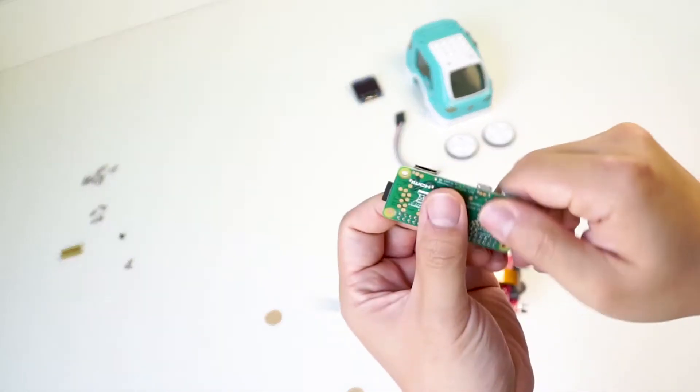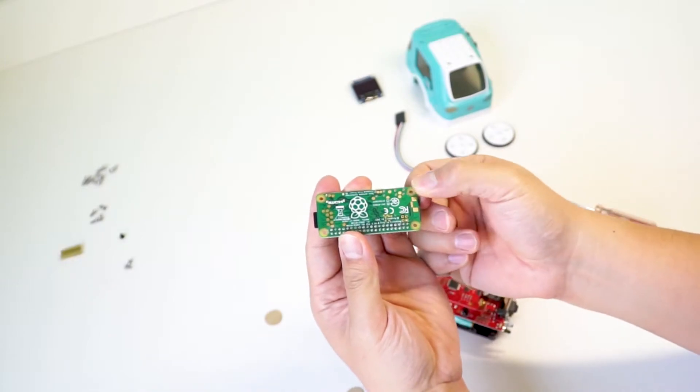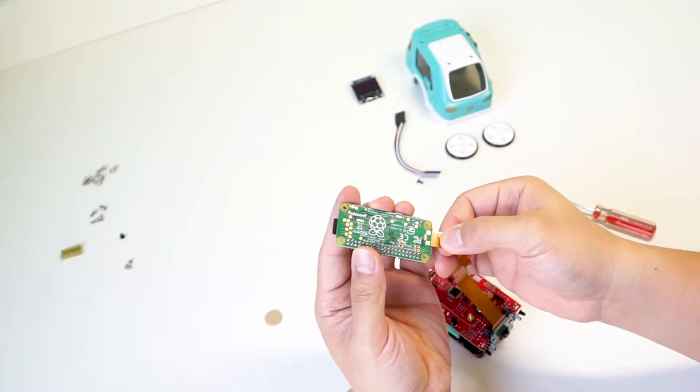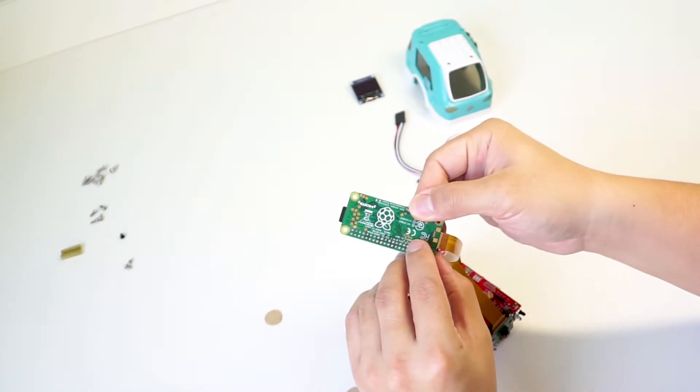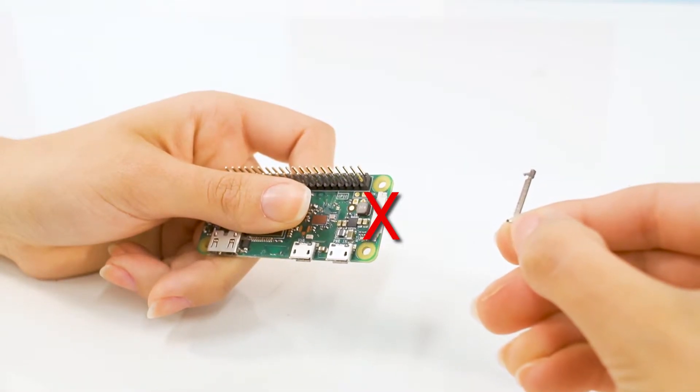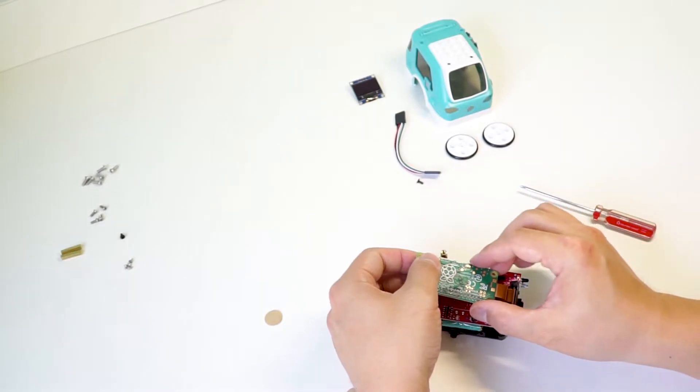Now here's your Pi Zero. We're going to flip it over like this and connect the camera cable by pulling the latch outward, sliding the cable in and then closing the latch. Do not detach the latch completely because then your camera cable has nothing to hold it in place. Then tuck the cable underneath the Pi Zero.